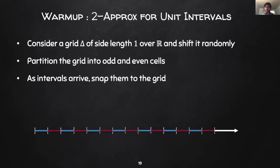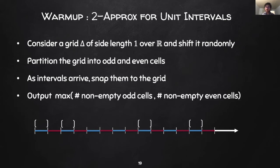As intervals arrive, we snap each interval to one cell in the grid that contains the center of the interval. Note, since we randomly shifted the grid, there is a unique cell for each interval with probability 1. We then output the maximum number of non-empty cells between the odd and even cells as our estimate to the maximum independent set. Observe, no two intervals that lie in distinct odd cells can intersect, and intervals lying in the same cell must always intersect.